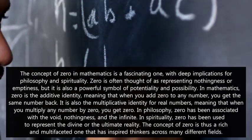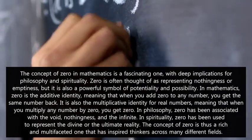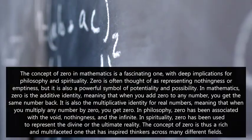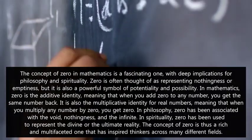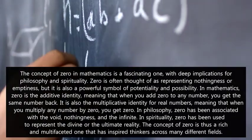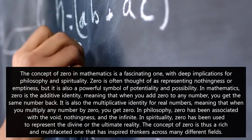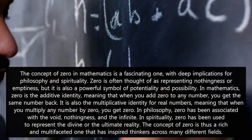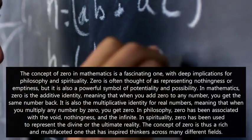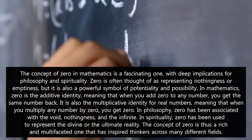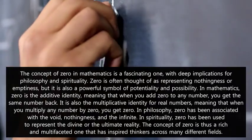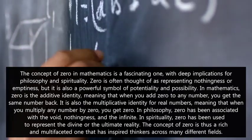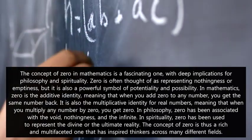Zero is often thought of as representing nothingness or emptiness, but it is also a powerful symbol of potentiality and possibility. In mathematics, zero is the additive identity, meaning that when you add zero to any number, you get the same number back. It is also the multiplicative identity for real numbers, meaning that when you multiply any number by zero, you get zero.